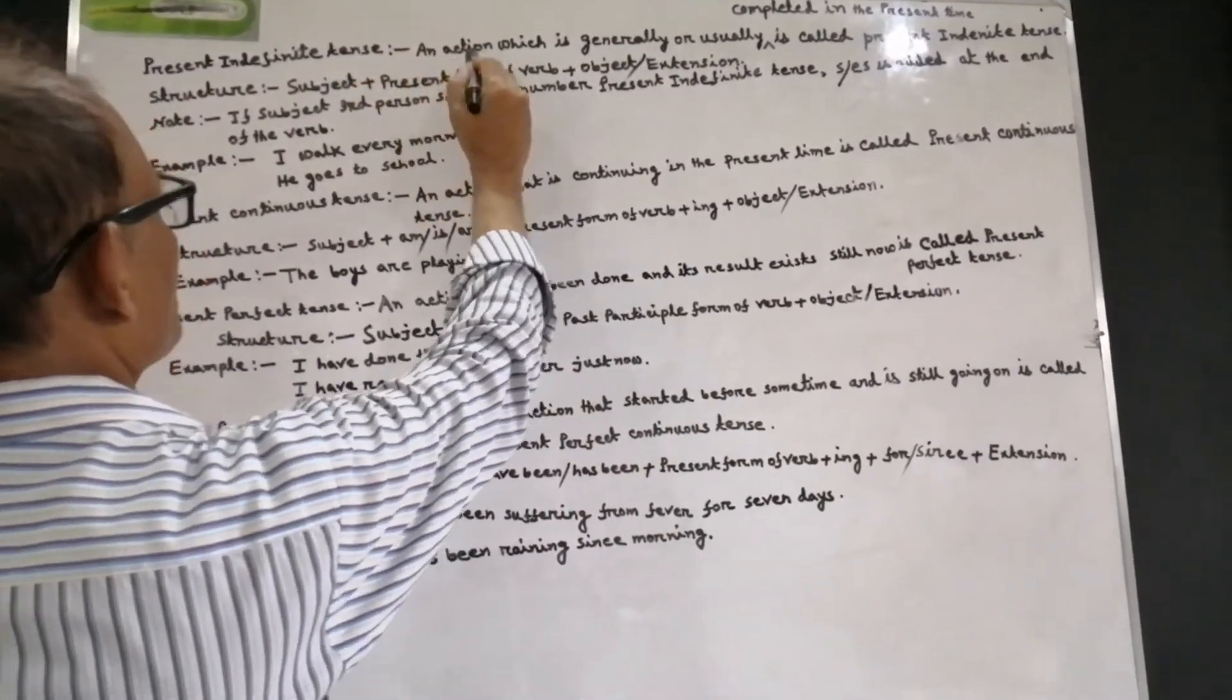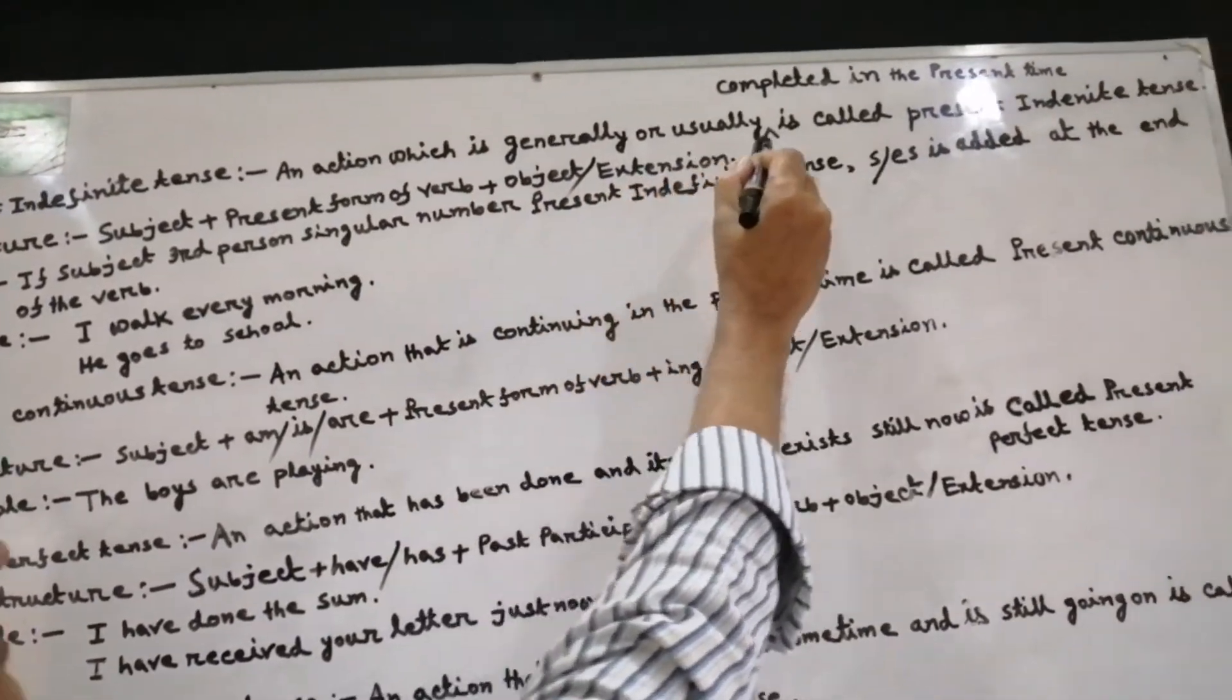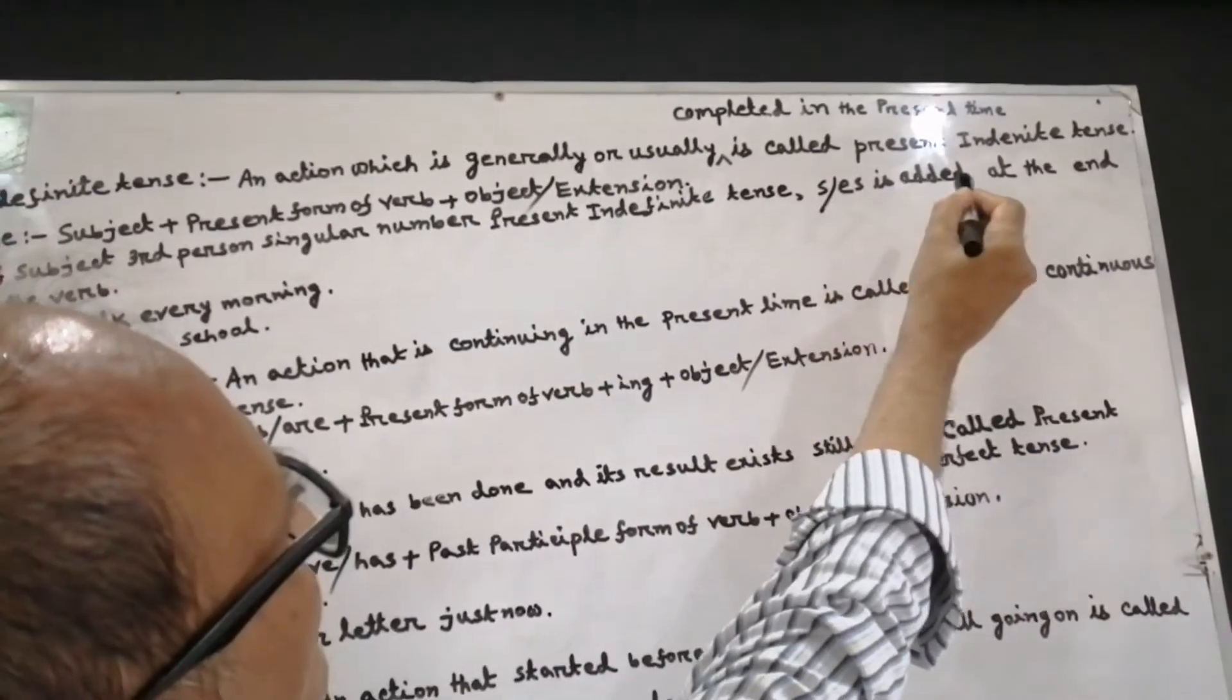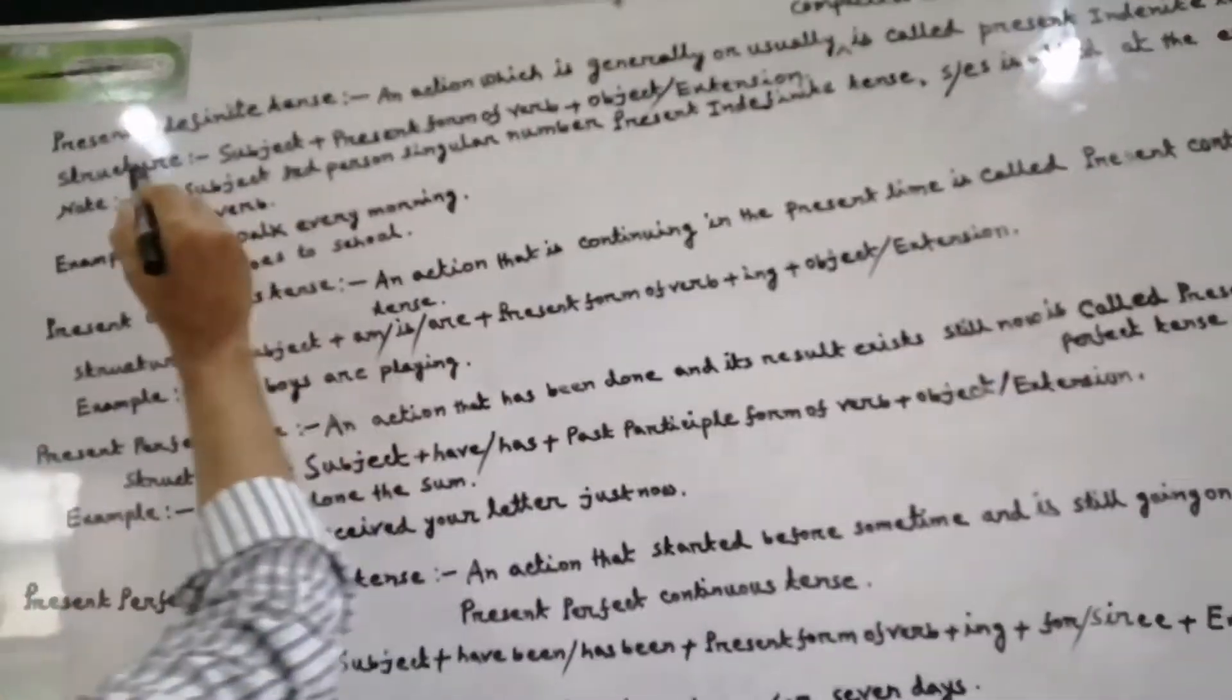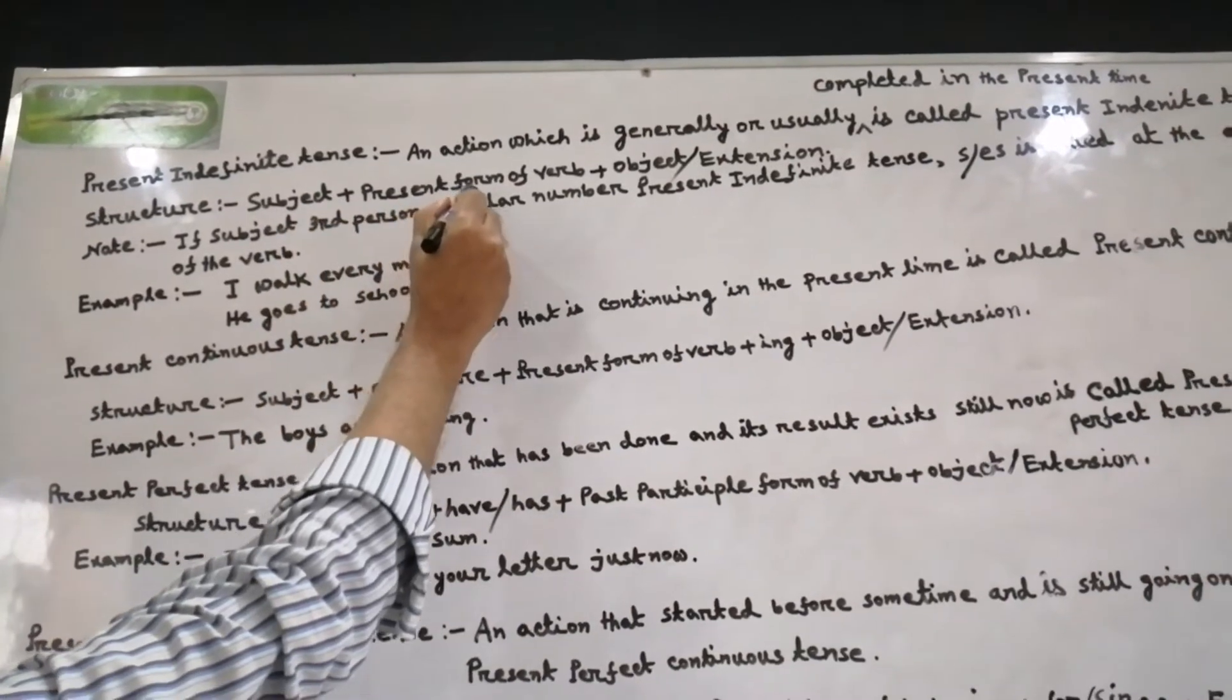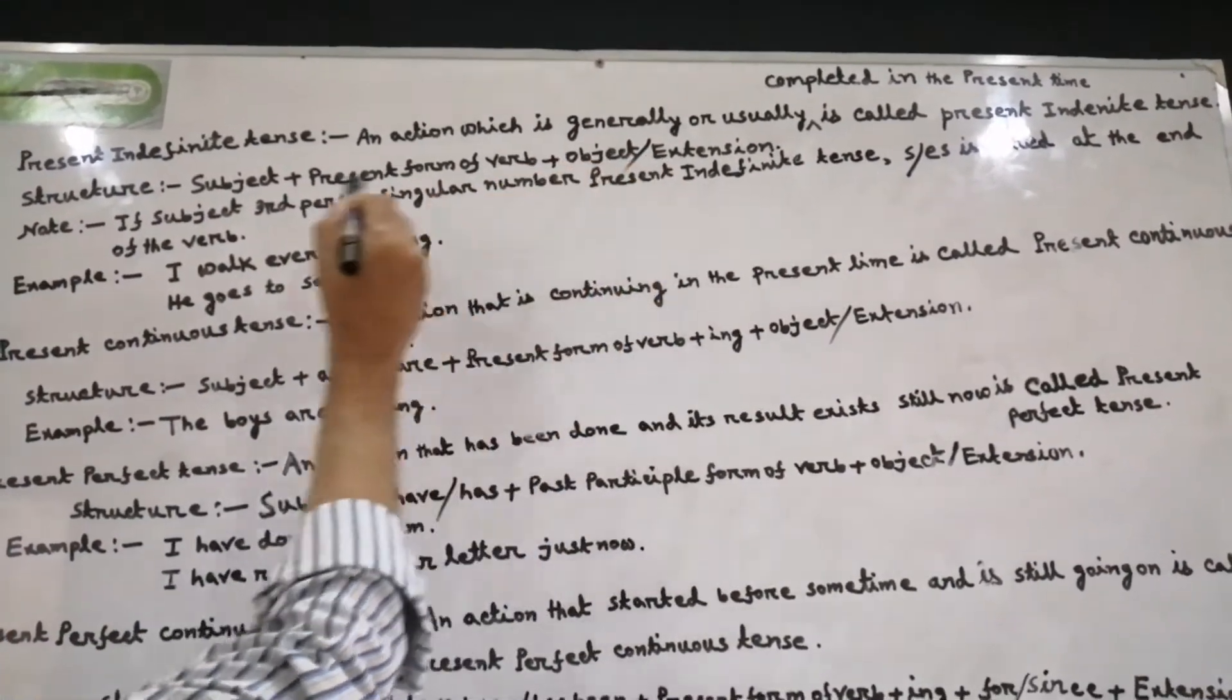What is present indefinite tense? An action which is generally or usually completed in the present time is called present indefinite tense. Structure: subject plus present form of verb plus object or extension.